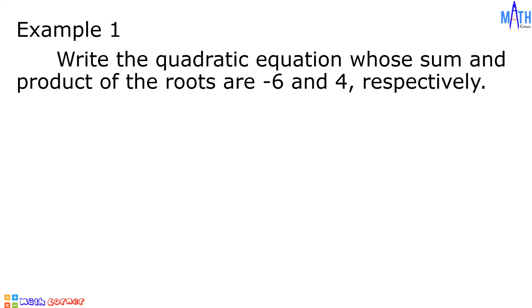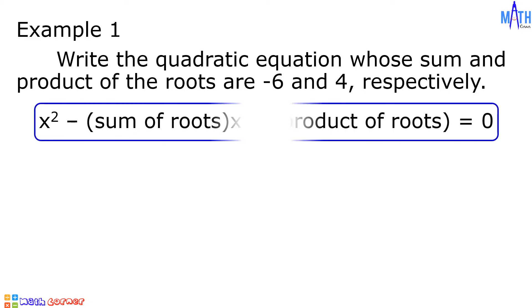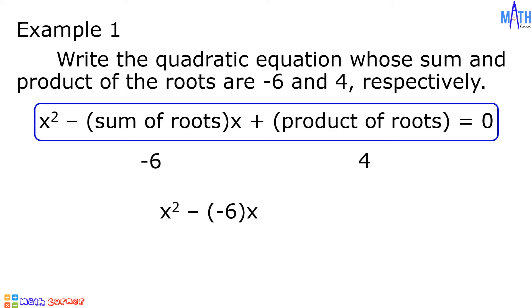Example number 1: write the quadratic equation whose sum and product of the roots are negative 6 and 4 respectively. We have x squared minus sum of roots times x plus product of roots equals 0. The sum of the roots is negative 6 and the product of the roots is positive 4. We have x squared minus negative 6 times x plus 4 equals 0, which becomes x squared plus 6x plus 4 equals 0.